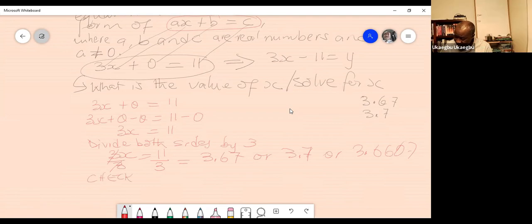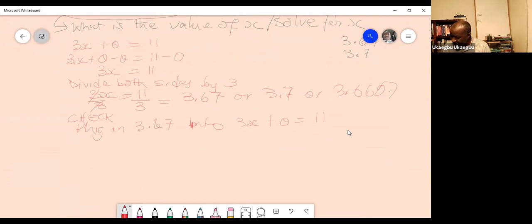So check. Okay. So plug in 3.67 into 3X plus 0 equals to 11. So if you plug in that number, then if the left side gives you the same value as the right side, then you are correct.